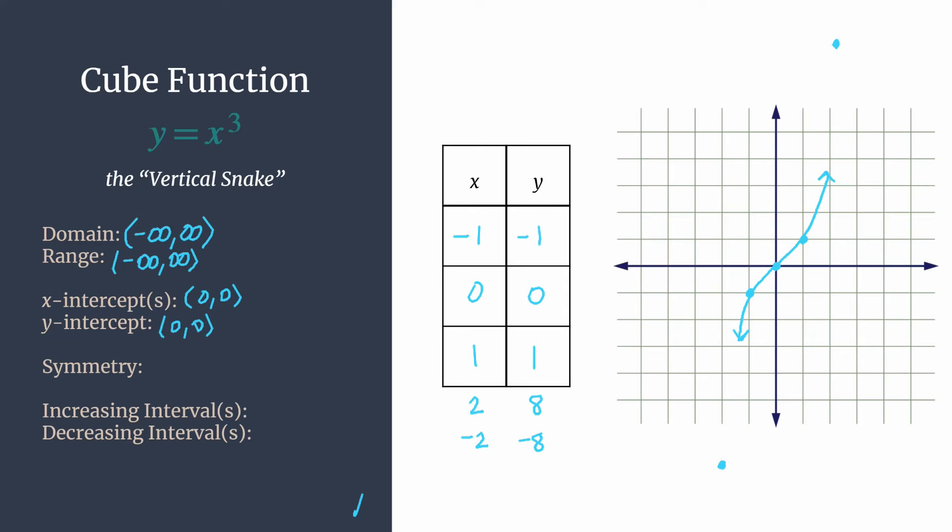Remember origin symmetry is if you took your graph and rotated it 180 degrees, it should land on top of itself. Geometrically, we can say that for every point x, y on the graph, there should be a point negative x, negative y on the graph. And you can actually see that with a couple specific examples with 1, 1, and negative 1, negative 1, or with these two points here with 2, 8, and negative 2, negative 8. So those are just examples of what that means.